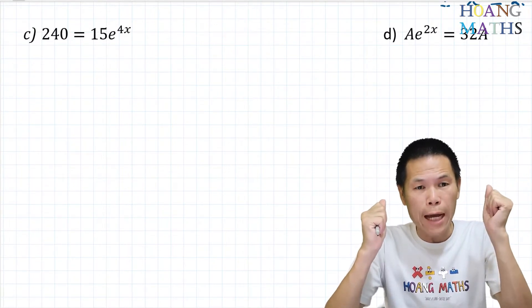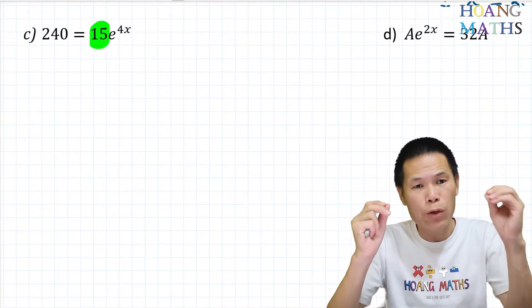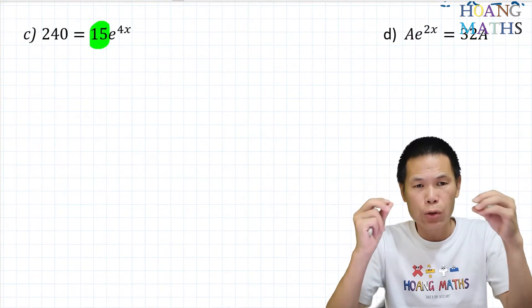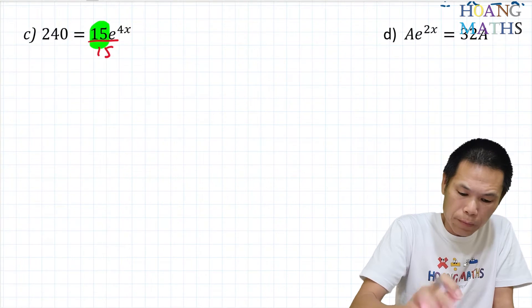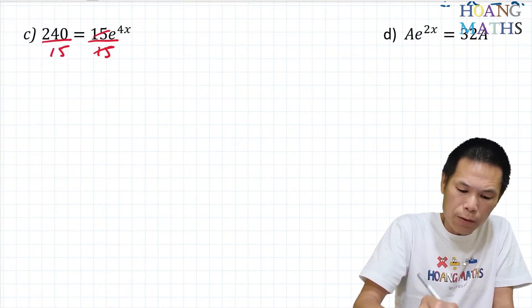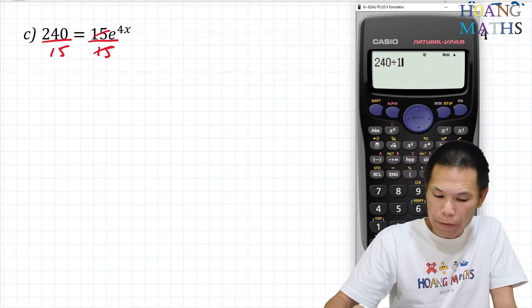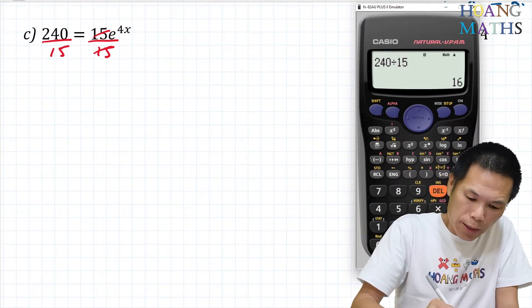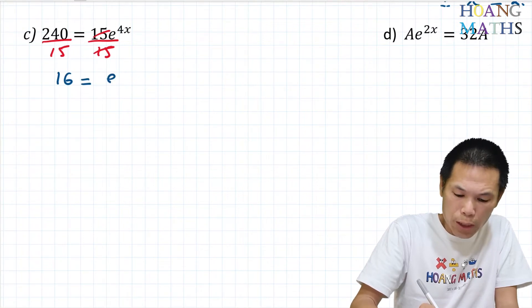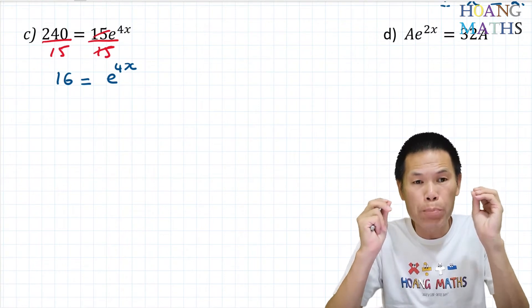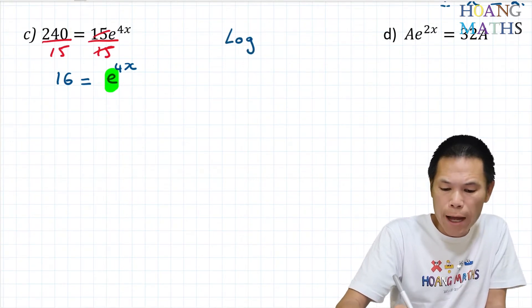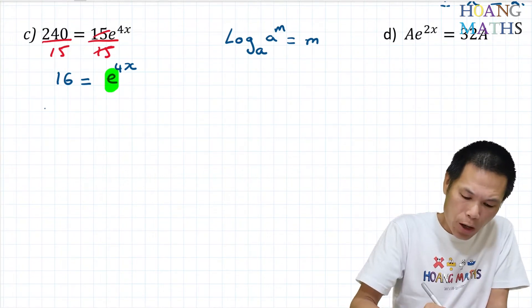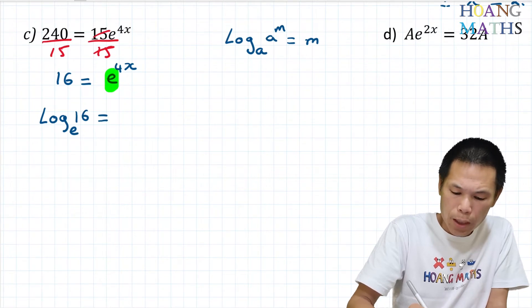Let's move on to part c. Before we take log on both sides, we need to get rid of the 15 first — in other words, we must get rid of the coefficient of e to the power 4x. So I divide both sides by 15: 240 divided by 15 equals 16. So 16 equals e to the 4x. Now I can take log on both sides — log base e, because of e to the power 4x. Remember: log of a, a to the power m, equals m.